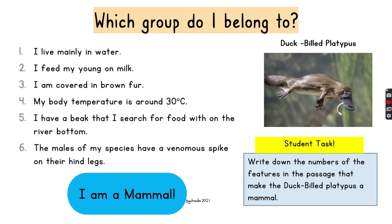Write down the number of features in the passage that make the duck-billed platypus a mammal. The answer is features two, three, and four: feeding young on milk, brown fur, and body temperature around 30 degrees Celsius — which refers to being warm-blooded. Some features could belong to other groups — living in water could suggest fish or amphibian, having a beak could suggest bird, and venom could suggest reptile — but three out of six features make it a mammal.